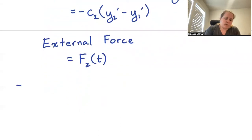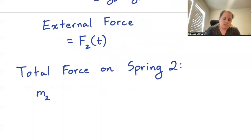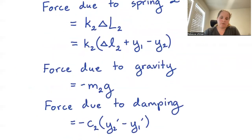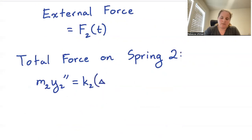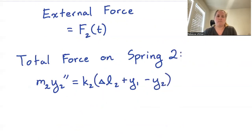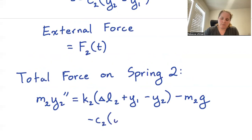So the total force on mass two gives us M2 times Y2-double-prime equals K2 times (delta-script-L2 plus Y1 minus Y2), minus M2 times G, minus C2 times (Y2-prime minus Y1-prime), plus F2 of T.